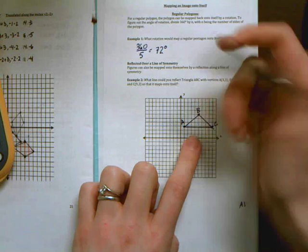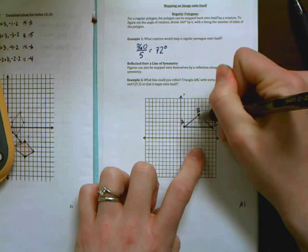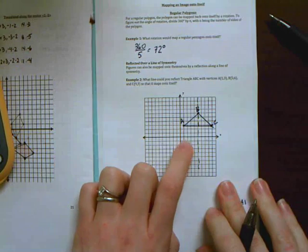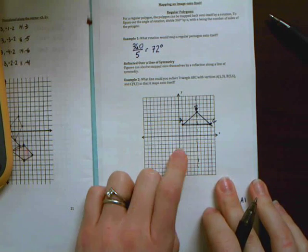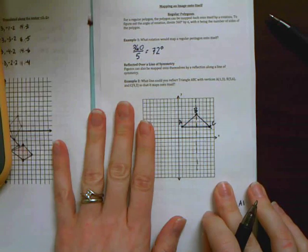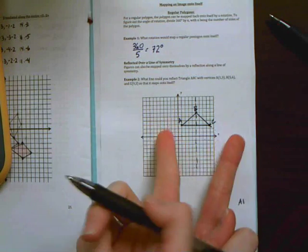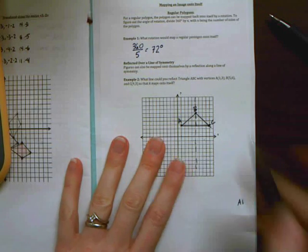The line of symmetry for this triangle is going to be right here because then both halves look exactly the same, which is part of our definition. Okay, so that means that if I take this image and reflect it over this point, my C is right now 1, 2, 3, 4 spaces away.